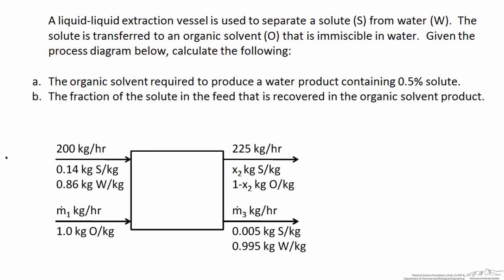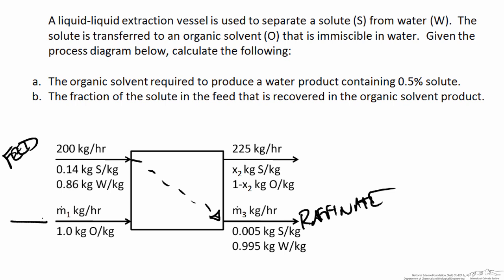The feed to the process consists of the solute in water, with a known flow rate of 200 kg per hour and a specified composition. As the solute-rich water phase transfers through the vessel, the solute is transferred from the water phase to the organic phase, leaving us with a product of primarily pure water. The solvent that's been depleted in the solute is known as the raffinate. The other feed of the process is pure organic solvent, indicated by the composition variable of 1, and we have an unknown flow rate of M1.